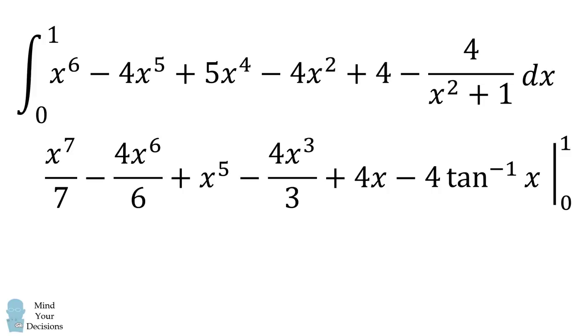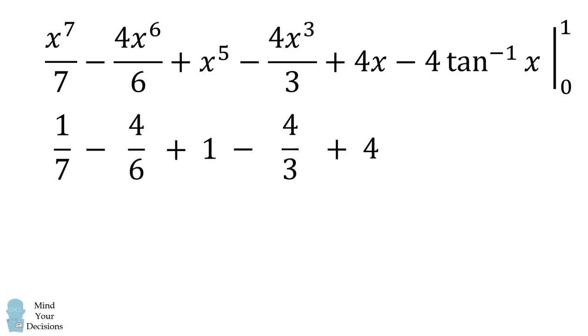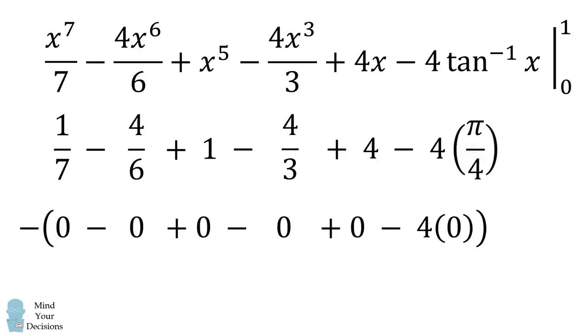From here, we want to evaluate this from 0 to 1. So we can evaluate each of these at 1. It'll be a fraction for each of these polynomial terms. For the trigonometric function, the arctangent, the inverse tangent of 1 is equal to pi over 4. So we'll evaluate that. We also evaluate each of these at 0, and notice that each of these terms will vanish. So we're going to just eliminate this entirely.